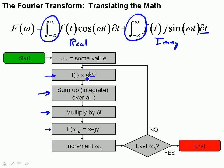We take the product, we integrate, we multiply by delta t, and we come up with a complex number that has a real and imaginary part of that omega.